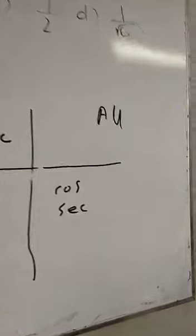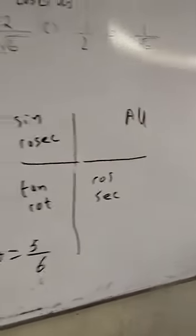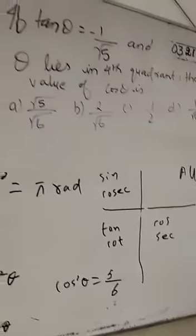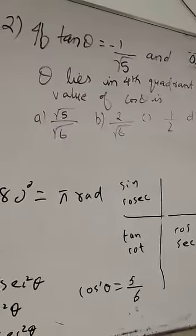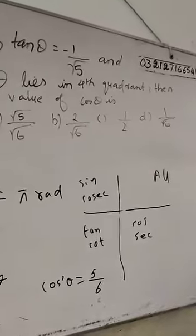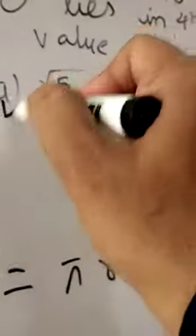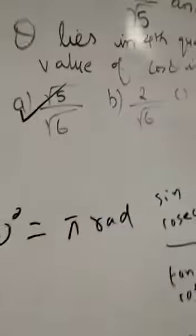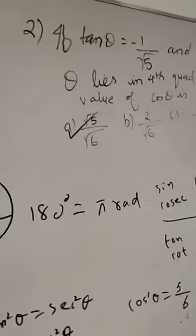The value of cos θ is equal to root 5 upon root 6. So the answer will be option A: root 5 upon root 6.